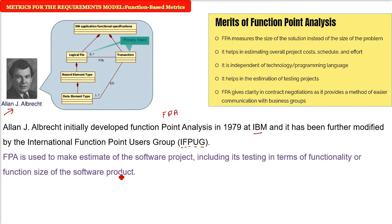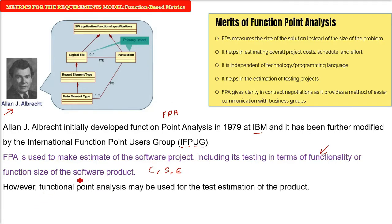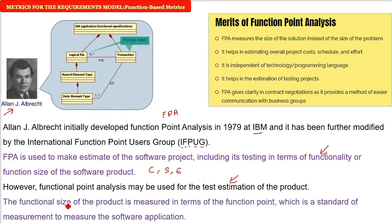Now this FPA is used to make estimates of the software project including its testing in terms of functionality or the function size of the software product. So the cost, schedule and effort can be computed. This function point analysis may be used for test estimation of the product also.